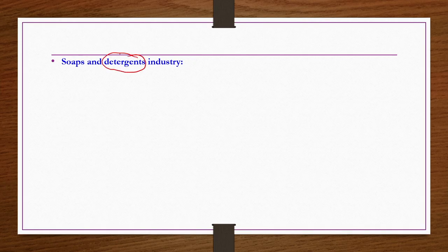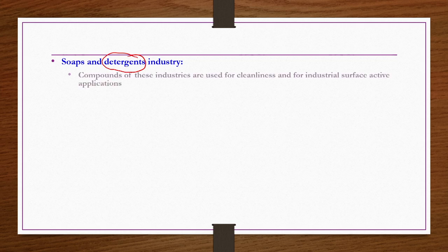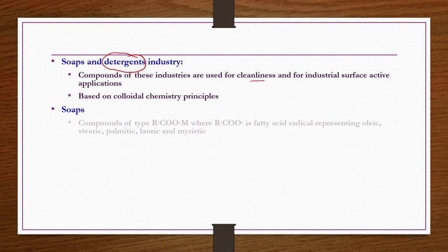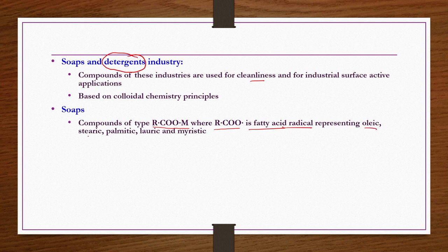Next is soaps and detergents industry. Detergents are not a natural product, but because of their competitive role compared to soaps, they are discussed alongside the soap industry. Compounds of these industries are used for cleanliness and industrial surface-active applications. The basic chemistry involved is colloidal chemistry. Soaps contain compounds of type RCOOM, where RCOO is a fatty acid radical representing oleic, stearic, palmitic, lauric, myristic, etc.